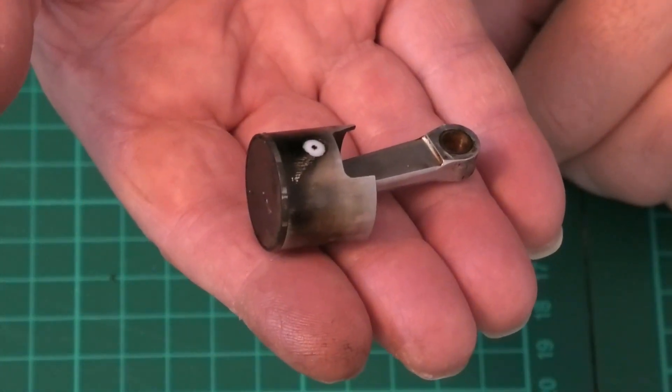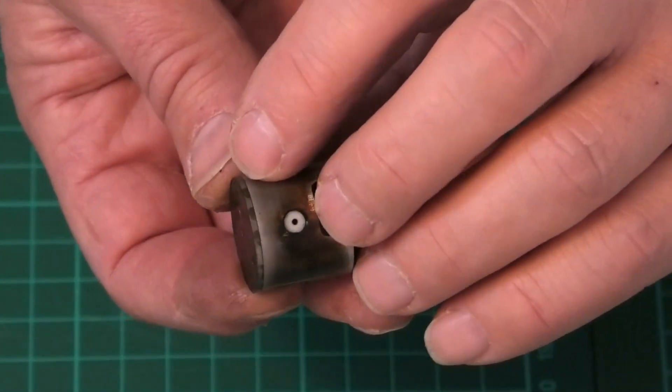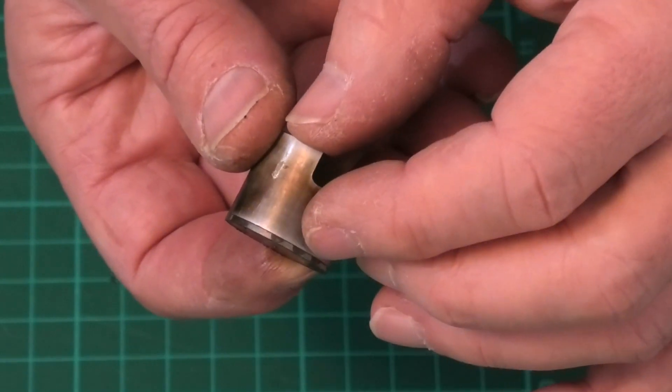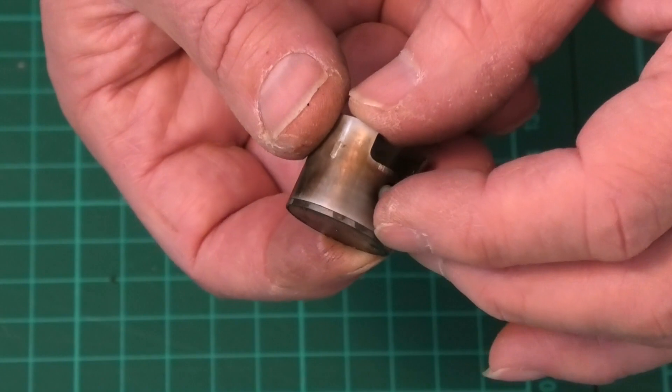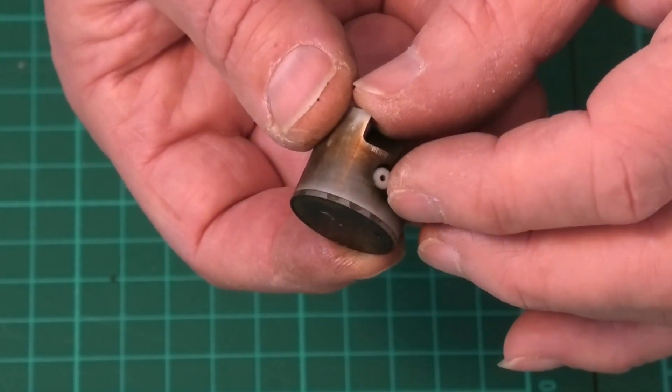Well there's our piston and we can see there's a ring around the top edge here and that's because it's a Dykes piston ring. They sit around the very top of the piston around the rim. If it was a conventional piston ring it would just be a little bit further down.